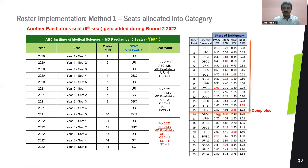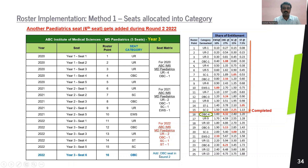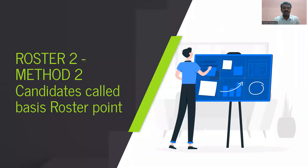Consider a scenario where roster points up to fifteen have been completed for round one. In round two, a 16th pediatric seat gets added. You go to the 16th roster point, which is OBC, so you add one OBC seat for round two. If any seat gets added during rounds, you simply follow the roster — stop where admissions ended and start from the next point next year. Automatically the reservation percentages will be accommodated as per the roster.